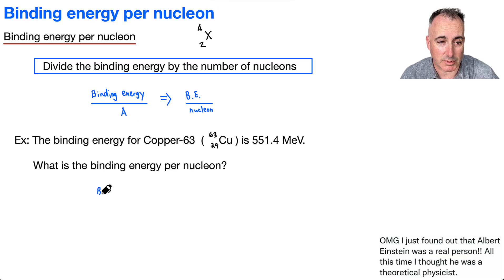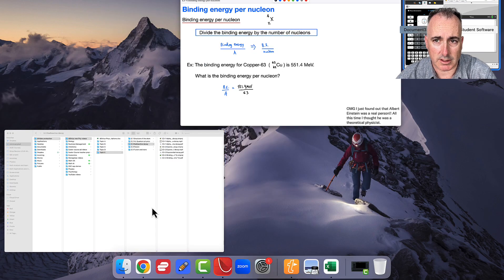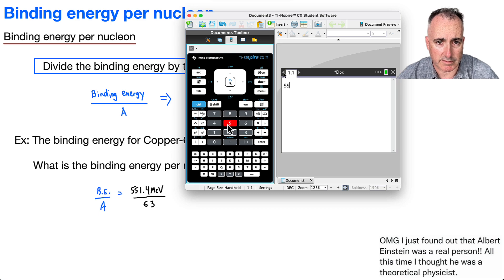You just say, I'll just write BE over A, for example. Well, that's going to be equal to, in this case here, just 551.4 MeV, divide that by the number of nucleons, which in this case is 63. I'm just going to get out my good old calculator and just do that. So we'll go 551.4, divide that by 63, and I get an answer of 8.75238.